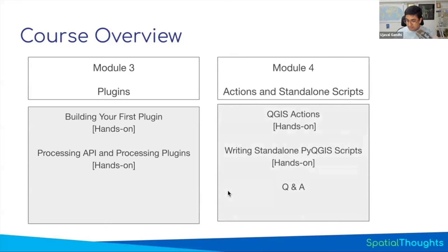While plugins are deployed at the QGIS application level and are always available, actions are deployed per project. If you have a QGIS project file, you can define actions, and whoever has access to that project will have that customization with them. That's really useful — you don't have to install anything, just open a project and you can run the customizations. Finally, we'll also learn how to write PyQGIS scripts standalone, without running QGIS interactively.